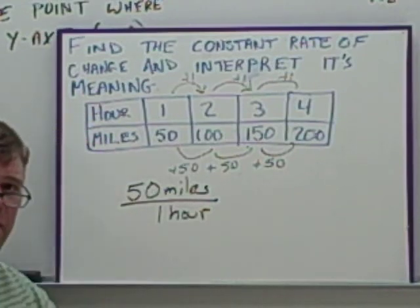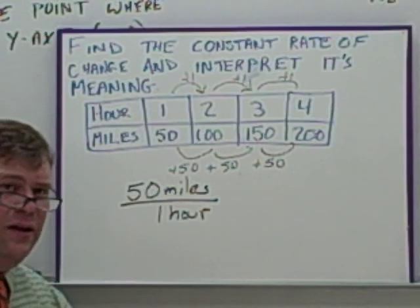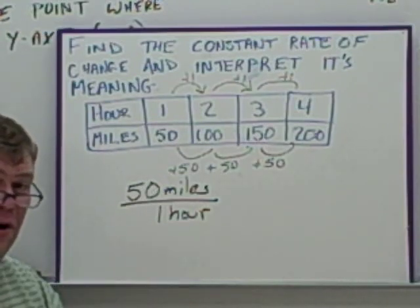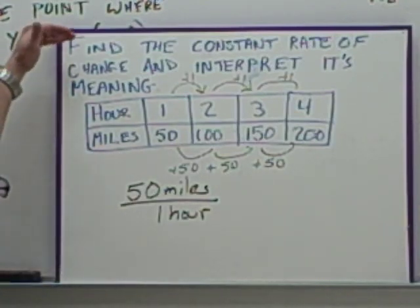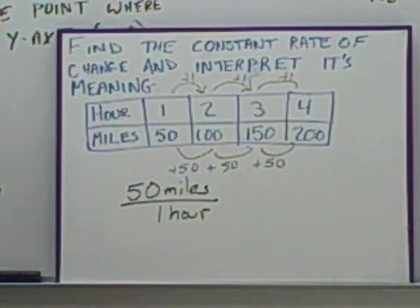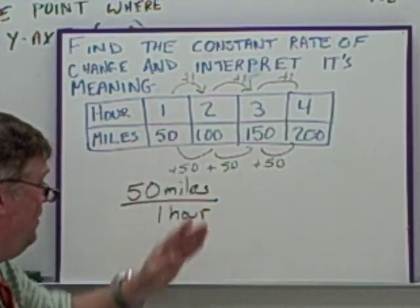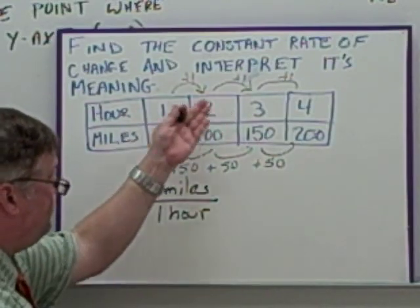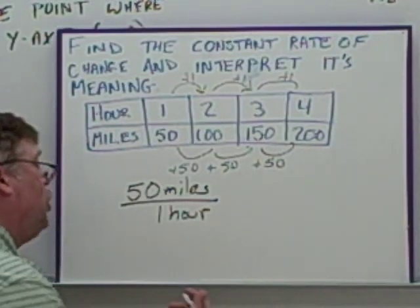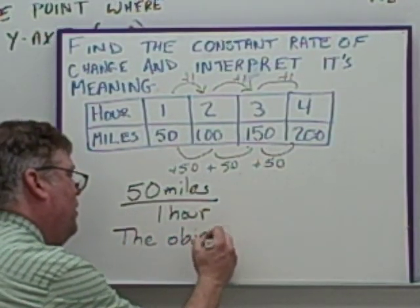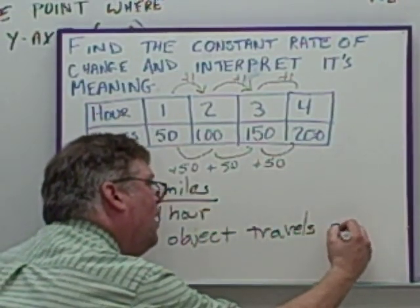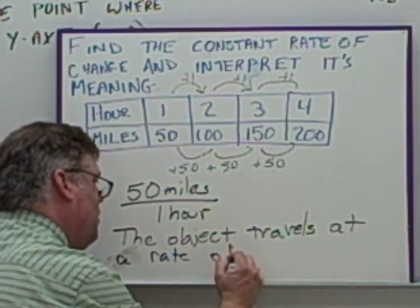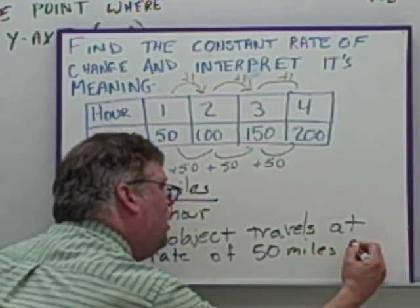Notice how this time I included the units. Last time it was just x and y. When they talk rate of change, they're almost always going to have units involved because units are a major part of rates. Now here, we said to find the constant rate of change and interpret its meaning. This is the constant rate of change. It's changing by 50 miles per hour, a constant 50 miles per hour. However, to describe it, we actually have to write, to interpret it. It's the same as saying describe it. Write it out in words.